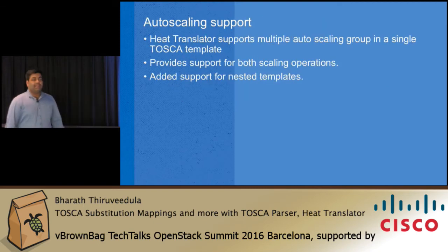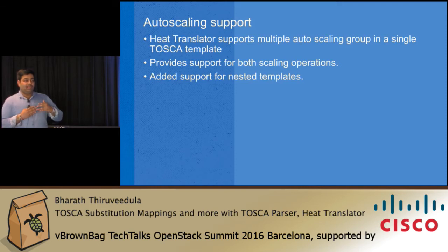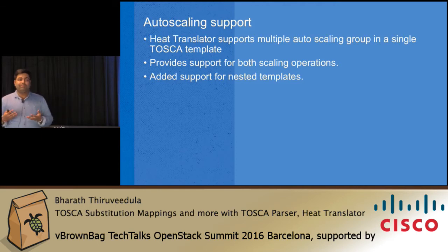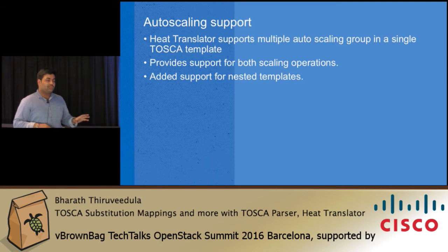Another feature added in the Newton cycle for Heat Translator is autoscaling support. You define a scaling policy where you specify a compute node with a minimum of 2 instances and a maximum of 5 instances. If CPU utilization exceeds 50 percent, it scales out. Such a policy gets converted into a Heat template. That is the autoscaling support in Heat Translator.